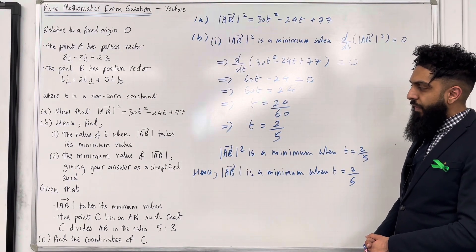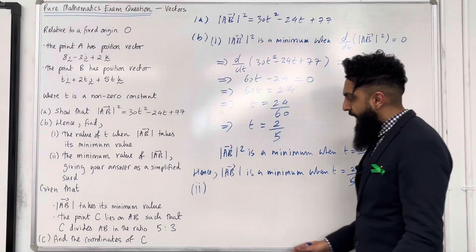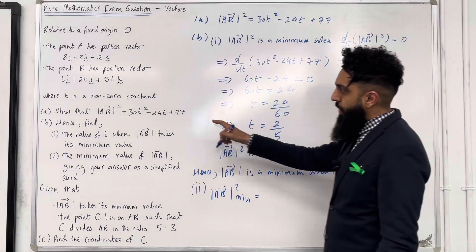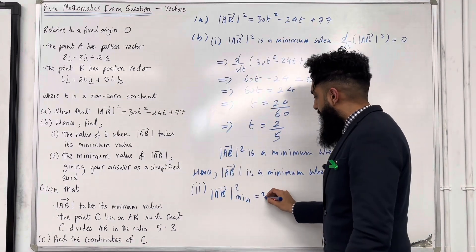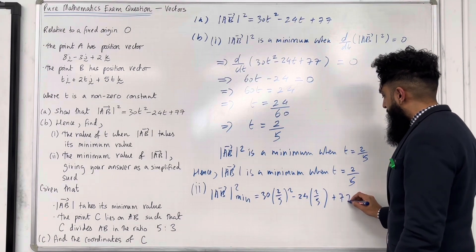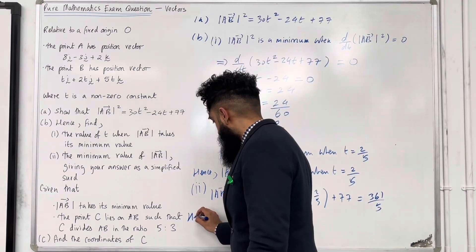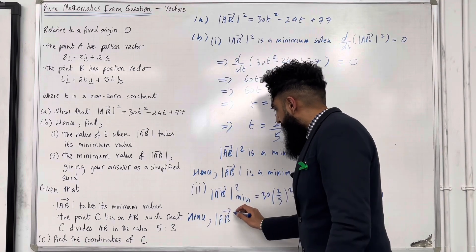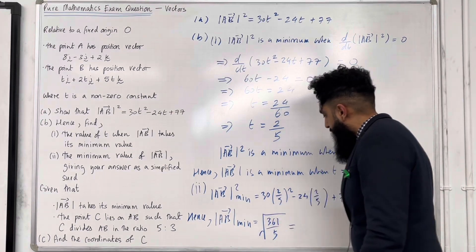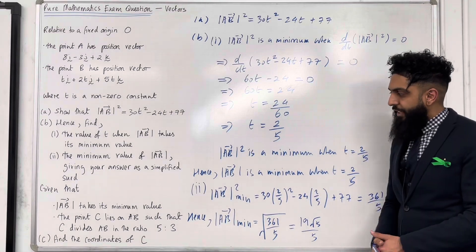We've got: hence find the minimum value of the magnitude of AB, giving your answer as a simplified surd. The magnitude of AB squared is a minimum when we substitute t equal to 2 over 5 into the quadratic expression: 30 multiplied by (2/5) squared minus 24 multiplied by (2/5) plus 77. Putting this into the calculator gives 361 over 5. Hence the magnitude of AB is a minimum when we take the square root: root(361/5), which simplifies to 19 root 5 over 5. This completes part 2 of part B.